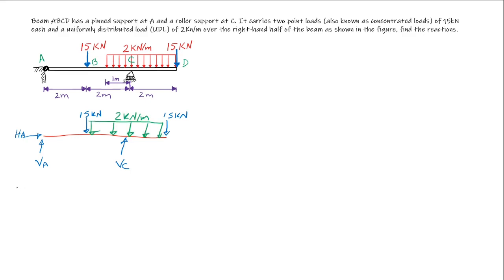We start the solution by finding HA. If you look at the free body diagram we could see that we have three unknowns, therefore we could use the three equations of equilibrium. To determine HA, the sum of horizontal forces must equal zero. Since we don't have any forces acting horizontally, HA equals zero.